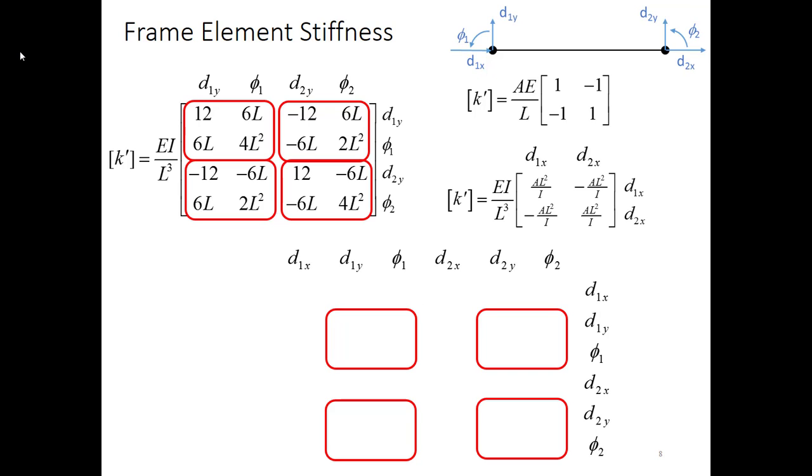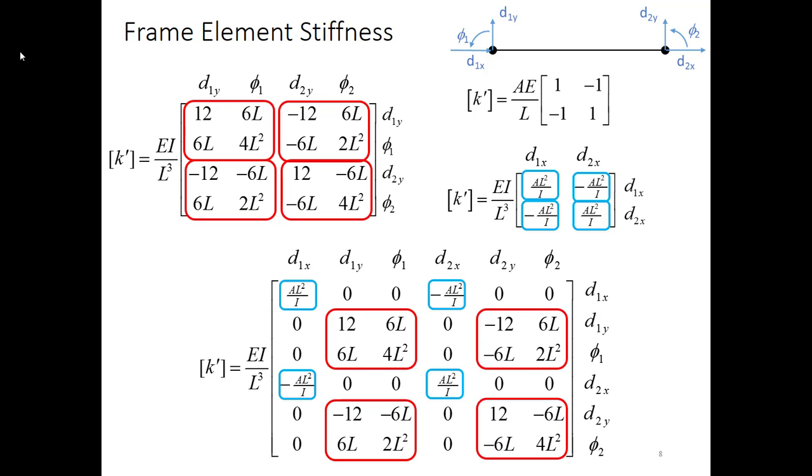Then I'm going to take the bar matrix and very similarly put those terms in where I've got the d1x and the d2x crossing. And everywhere that does not have a box identified is going to be 0 in the matrix. And that gives me the final frame element stiffness matrix, the same one we would have gotten by a more formal derivation process.